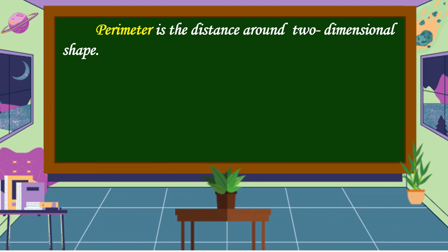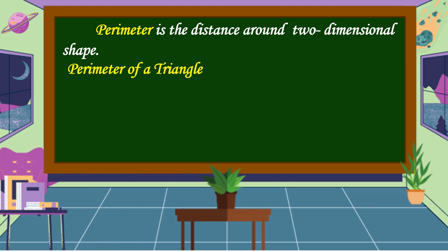What is a perimeter? A perimeter is the distance around a two-dimensional shape. When we say two-dimensional shape, it includes the length and the width.